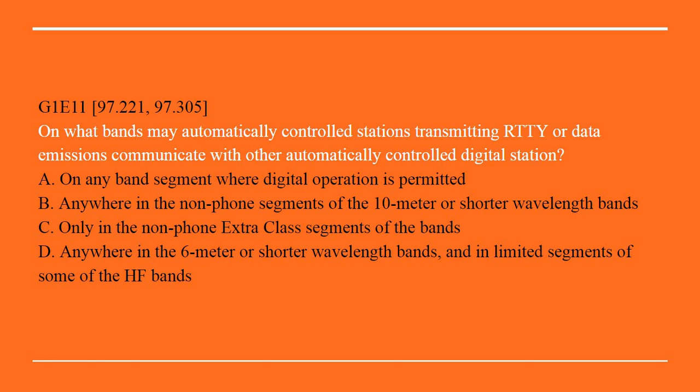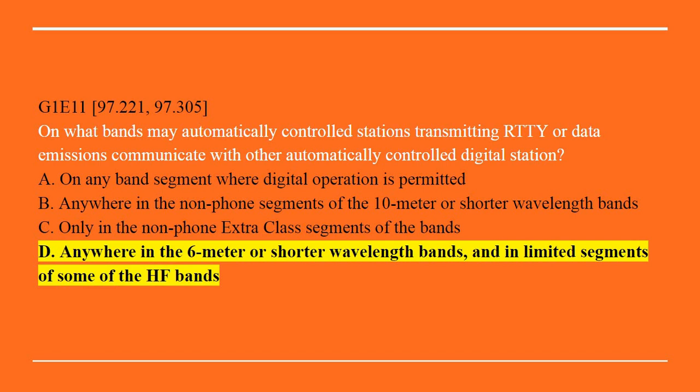G1E11: On what bands may automatically controlled stations transmitting RTTY or data emissions communicate with other automatically controlled digital stations? A. On any band segment where digital operation is permitted. B. Anywhere in the non-phone segments of the 10 meter or shorter wavelengths band. C. Only in the non-phone extra segments of the band. Or D. Anywhere in the 6 meter or shorter wavelengths band and in limited segments of some of the HF bands. Correct answer is D: Anywhere in the 6 meter or shorter wavelengths band and in limited segments of the HF bands.